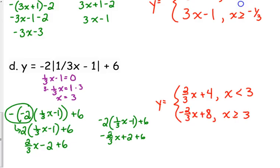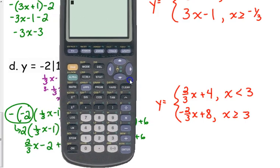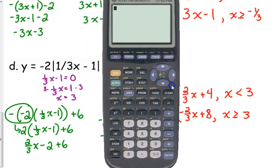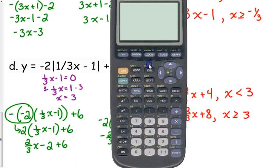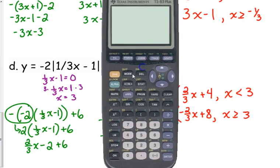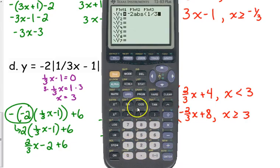Now, like with everything, you can check this with your calculator, especially this last one, because it looks really weird. I can see your reason for doubting that. So, what you need to do is you need to type in the original equation in your y equals, the original absolute value equation. Make sure you put the absolute value. One-third x minus one, close your parentheses, plus six.